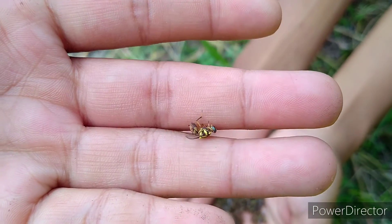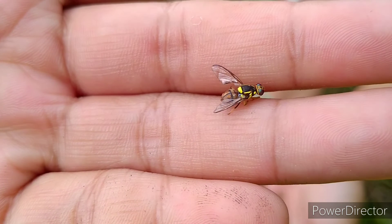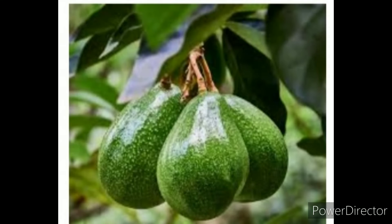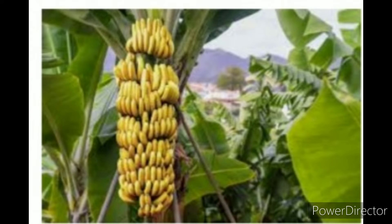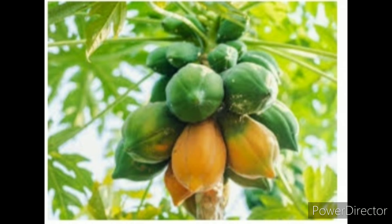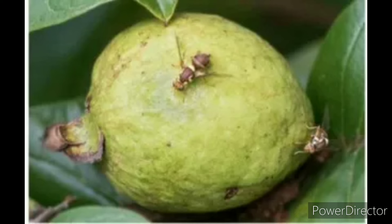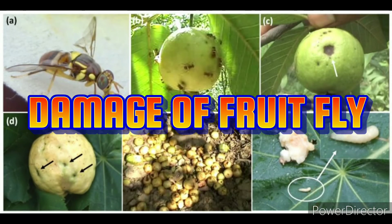The major host plants that can be attacked by fruit fly are avocados, banana, citrus, mango, papaya, and guava. Host range of fruit fly: fruit flies attack soft, fleshy fruits of a wide variety of fruit and vegetable crops.